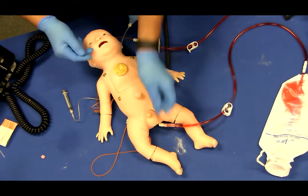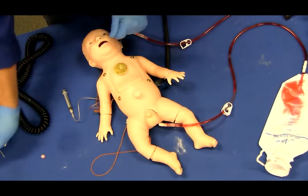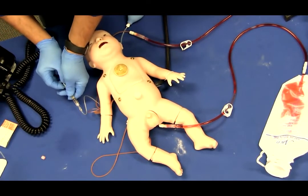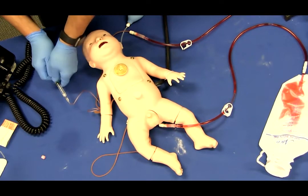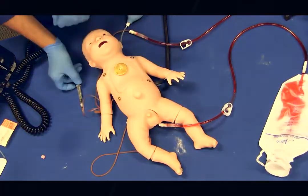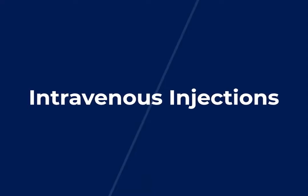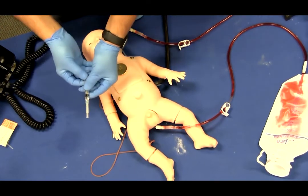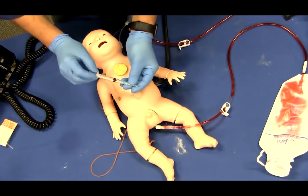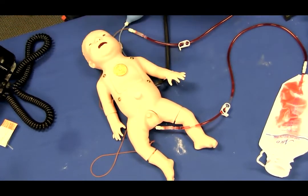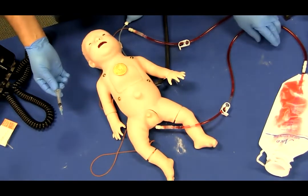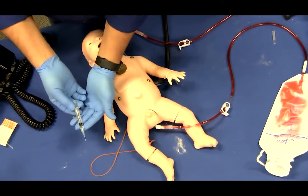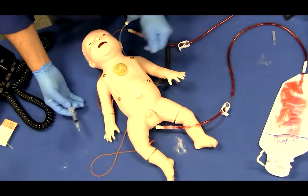For blood sampling, using one of the included 25 gauge needles, follow institution guidelines to perform blood withdrawals in the hand or foot. Flashback will occur when the needle is in proper position. Dye is not recommended as it could stain or cause damage to the simulator. Using the 25 gauge needle with syringe, follow institution guidelines to perform injections in the hand or foot.